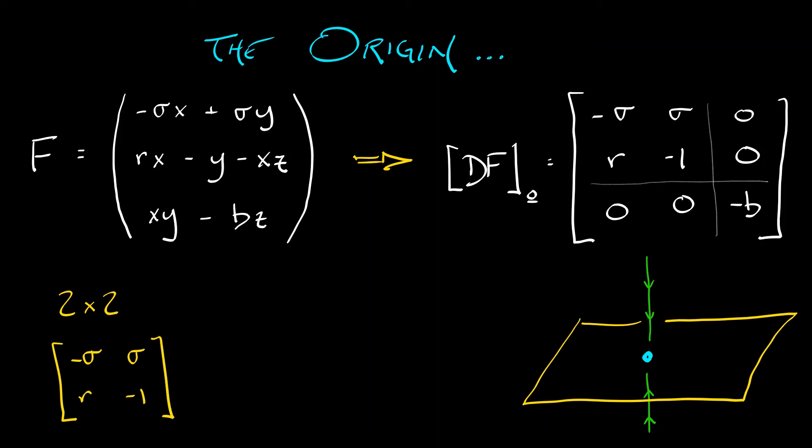This is going to be really simple. What's the trace of this block? It is minus sigma minus one. That's negative. What is the determinant of this two-by-two block? It's sigma minus r times sigma.